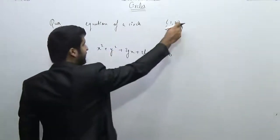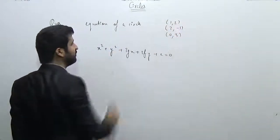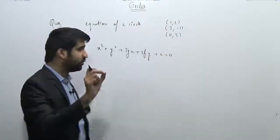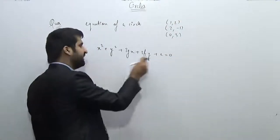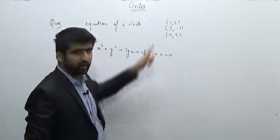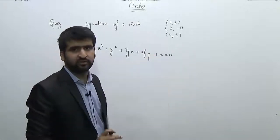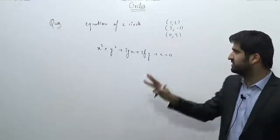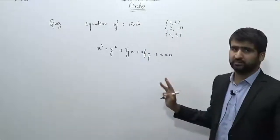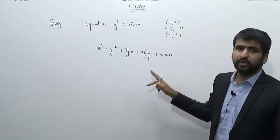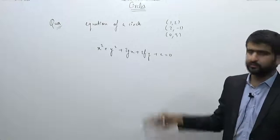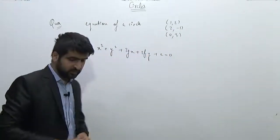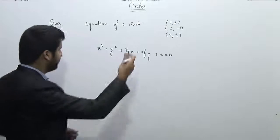From the first point, if we substitute (1, 2), we'll get an equation in g, f, and c. Similarly from the second and third points, we'll get three equations in three variables — g, f, and c — and we can solve them to get the equation of the circle.